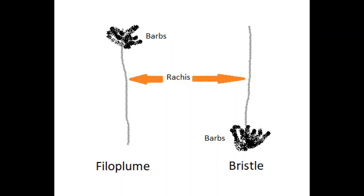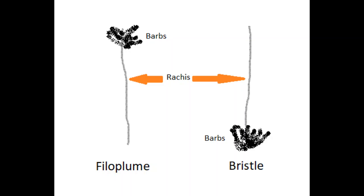There are two other types of feathers that are much harder to find. The bristle is a sensory feather near the beak and eyes, commonly found on nightjars like the Whippoorwill and Nighthawk. These feathers are short and stiff, and lack barbs along the rachis except near the base. They help the bird catch food as they fly.